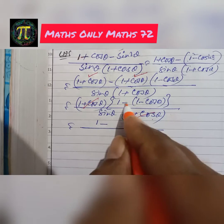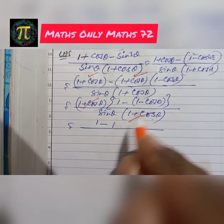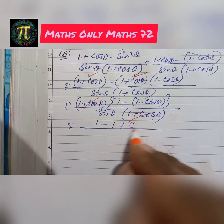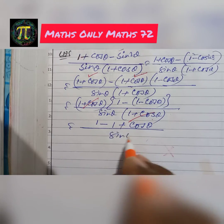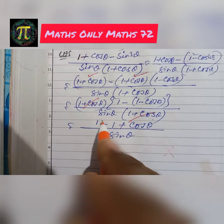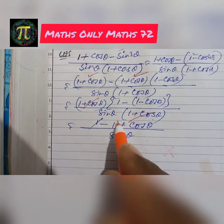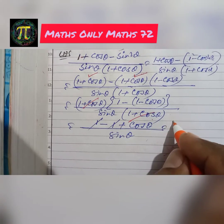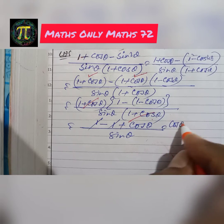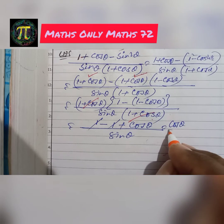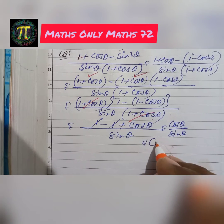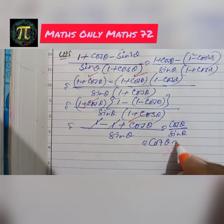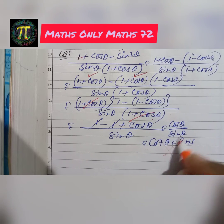After cancellation, we get cosθ / sinθ, which equals cotθ. Hence the left hand side equals cotθ, and the identity is proved.